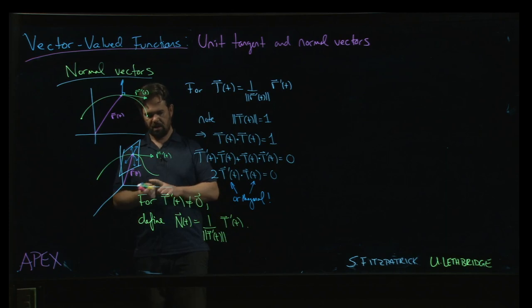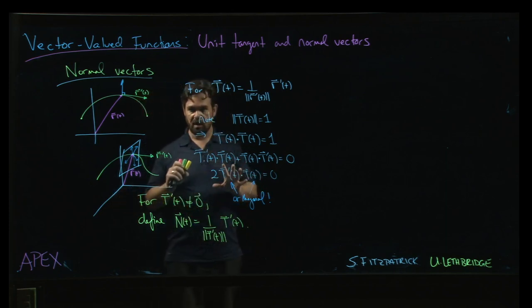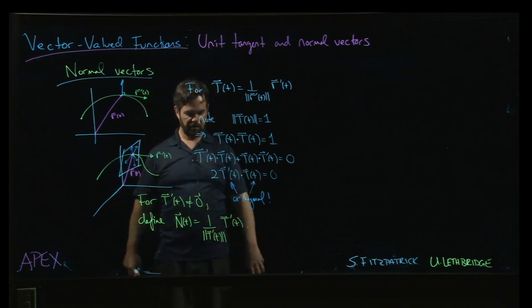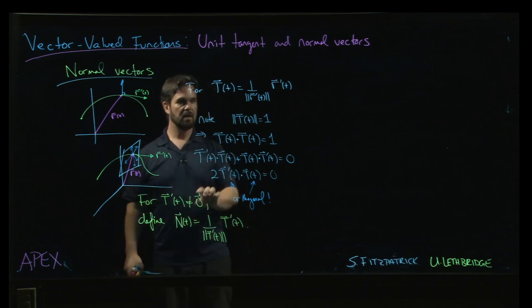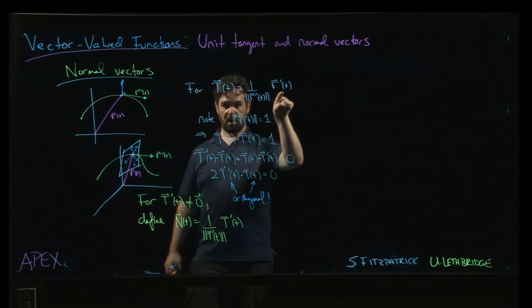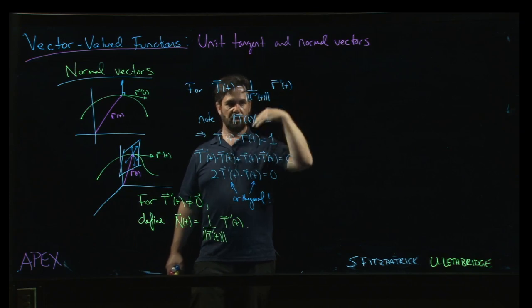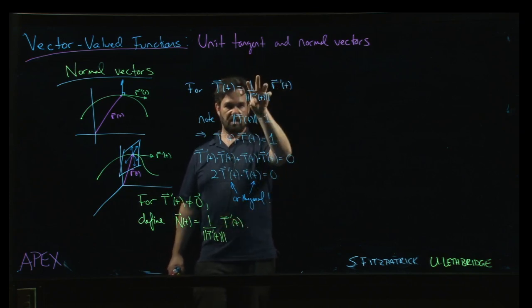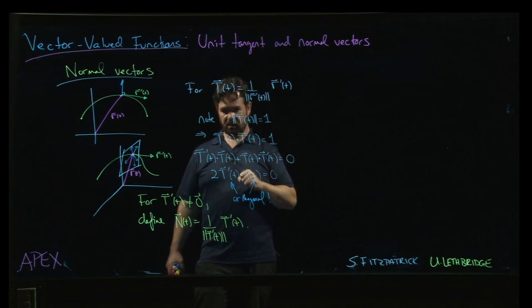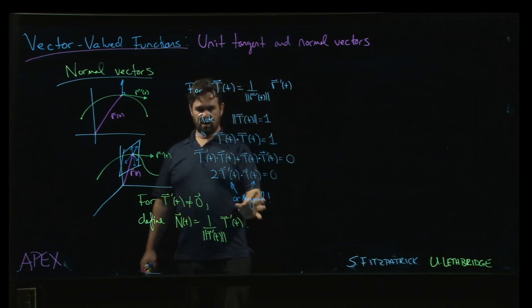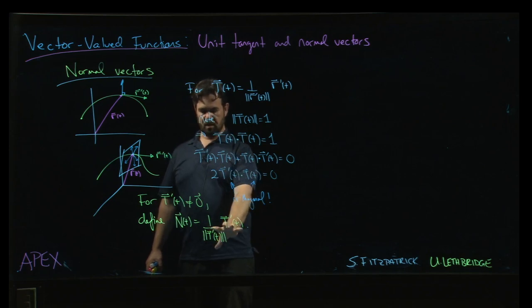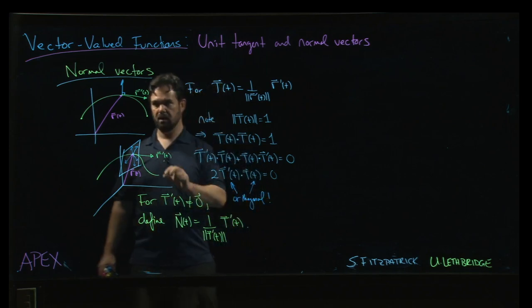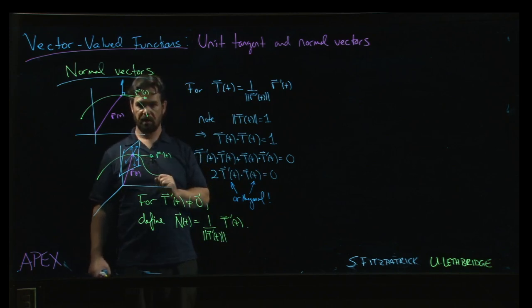And notice that this is somehow related to second derivative of the original vector valued function. Because t comes from r prime, t is parallel to r prime. And now we're taking the derivative of that. And so now the fact that we have this scale factor in front, which is also variable, is going to skew things a little bit. But we have something here which is, in some sense, related to the second derivative of the function r of t that we began with.